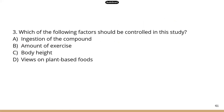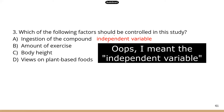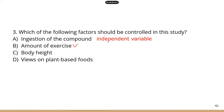Question three: which of the following factors should be controlled in this study? Any confounding factors that could lead to weight loss should be kept similar among the different groups. Ingestion of the compound is not a controlled variable — that is the independent variable. Amount of exercise should be kept similar across groups, so yes. Body height has no definitive relationship to weight, so that's not correct. The views on plant-based foods are also unrelated — they won't affect weight loss in this study.